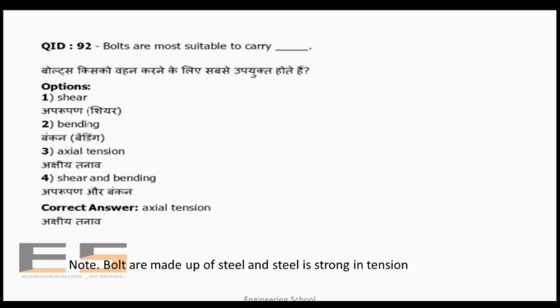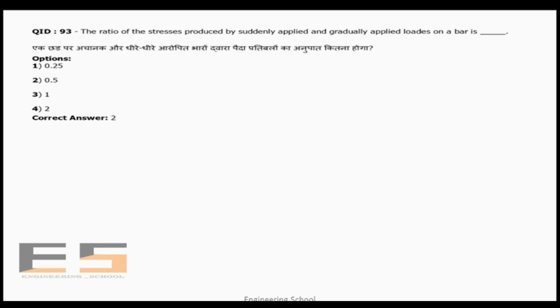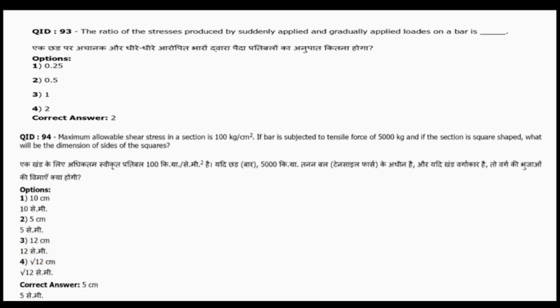Question 93: The ratio of stresses produced by suddenly applied and gradually applied loads on a bar is 2. Using the deflection formulas: deflection due to sudden load is P/(AE) and due to gradually applied load is P/(2AE), so the ratio of stresses works out to 2.